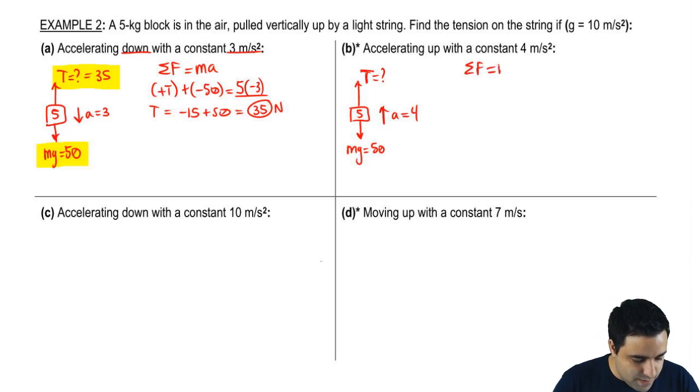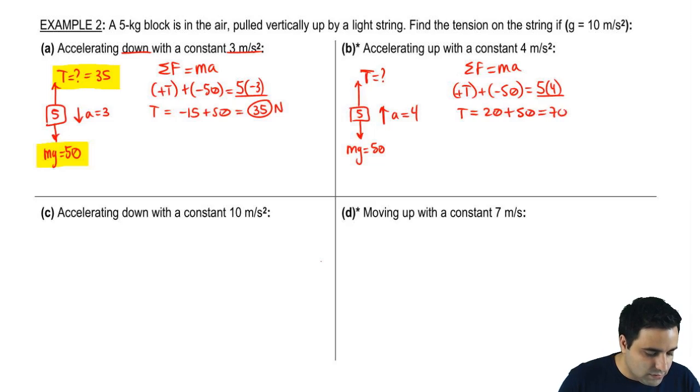Sum of all forces equals ma. I have tension up. I have negative 50 down. Mass is 5. And acceleration is 4, 4 positive. So I get t equals, this is 20 plus 50. This goes over to the other side. It becomes a positive equals 70.